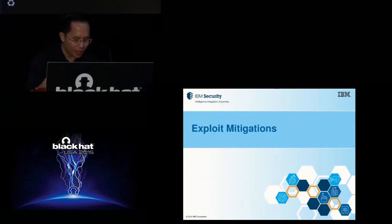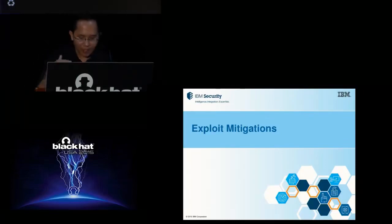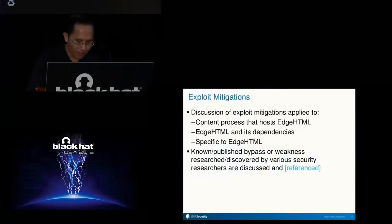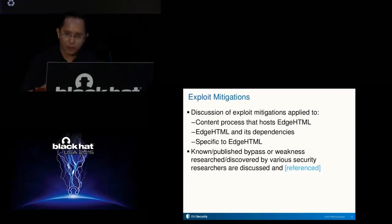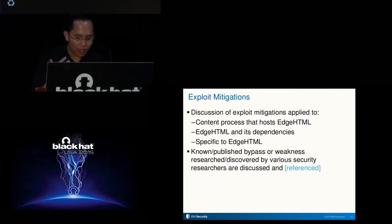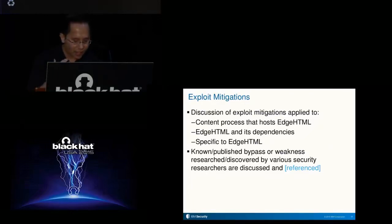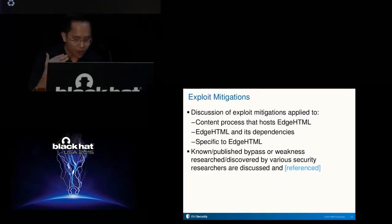Now that we have an understanding of EdgeHTML's attack surface, let's look at the exploit mitigations that an attacker would need to bypass in order to successfully exploit a vulnerability in EdgeHTML or any of its dependencies. I'll first discuss the exploit mitigations applied to the content process where EdgeHTML is hosted, then the mitigations applied to EdgeHTML and its dependencies, and finally the mitigations applied specifically to EdgeHTML — with each mitigation including discussion of non-published bypasses or weaknesses discovered by various security researchers.